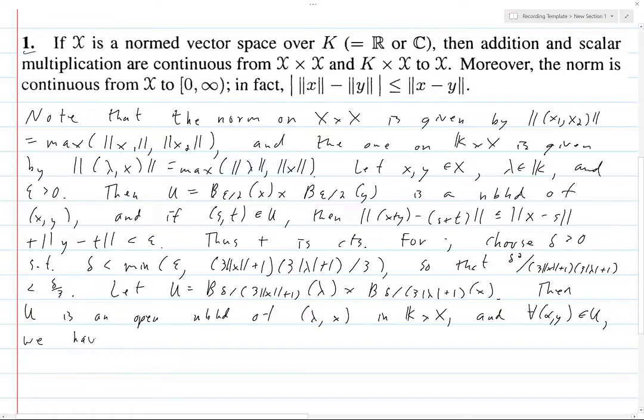So now we do an estimate. Lambda x minus alpha y. We add and subtract a mixed term that has something from both. Then when we do the triangle inequality, we get this factor and the lambda comes out. Then we get the difference of the scalars and the y comes out.